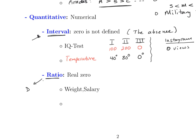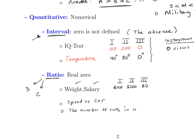Ratio data is what we actually call discrete and continuous, and here zero really means zero — the absence of something. For example, if one person has $100 and another has $200, you can say the second person has twice as much money. If someone has zero dollars, that means they have no money at all. Examples of ratio variables include weight, salary, and the speed of a car — speed and the number of cats are examples of continuous and discrete ratio variables respectively.